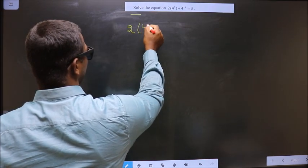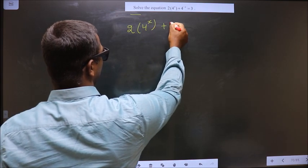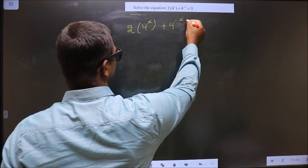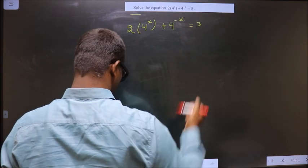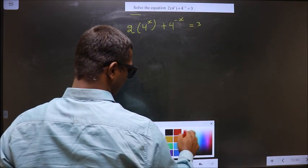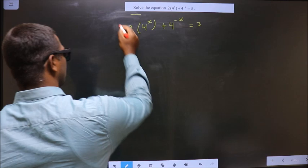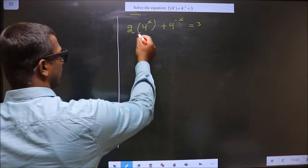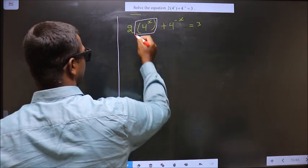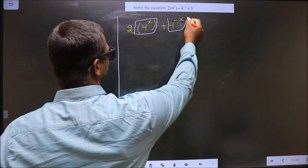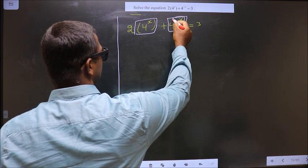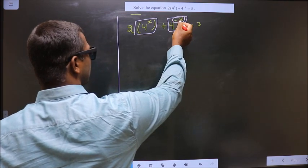2 times 4^x plus 4^(-x) equals 3. Now here you have 4^x, here you have 4^(-x), so I wish to make this negative into positive.